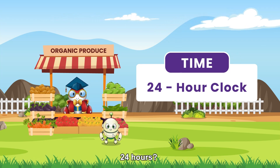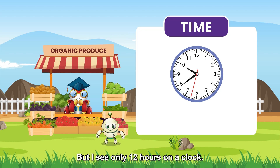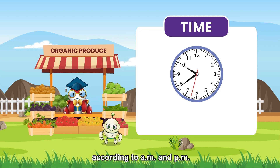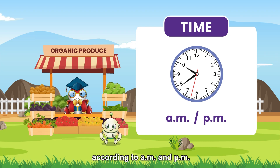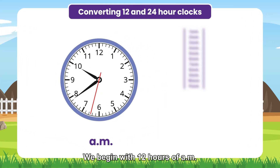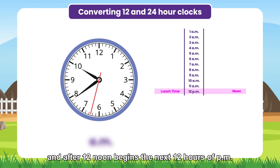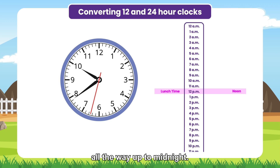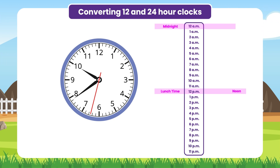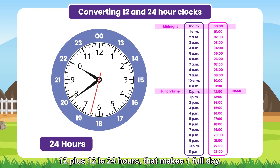24 hours? But I see only 12 hours on a clock. Previously we have learned to read time according to a.m. and p.m. We begin with 12 hours of a.m., and after 12 noon begins the next 12 hours of p.m., all the way up to midnight. 12 plus 12 is 24 hours — that makes one full day.